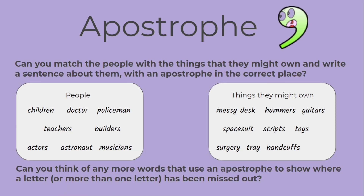Now pause this video and go back to your Google Docs sentence activity. Can you match the people with the things that they might own and write a sentence about them with an apostrophe in the correct place?